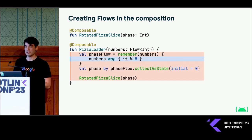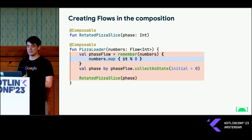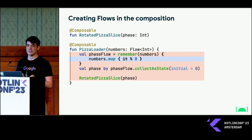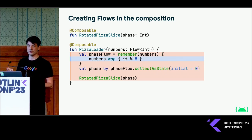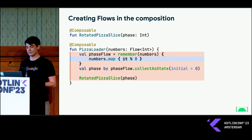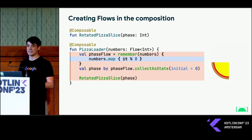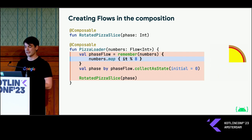What we need to do is keep the flow we're creating across recompositions, which we can do by simply remembering it. We pass in the numbers value as a key to make sure we only recreate it if our input flow changes. Running this, we now see a working animation that actually progresses through all of the phases.